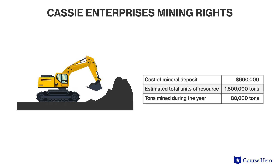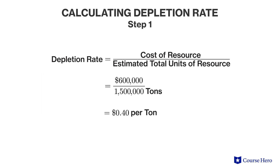Assume that Cassie Enterprises purchased mining rights at $600,000. The company estimates that it will be able to extract 1,500,000 tons of minerals. This year, the company extracted 80,000 tons. First, the company determines the rate of depletion incurred each time a unit of the resource is extracted. That rate is the cost of the natural resource, $600,000, divided by the expected output of 1,500,000 tons. This means that each time a ton of mineral is extracted, $0.40 of the natural resource has been depleted.